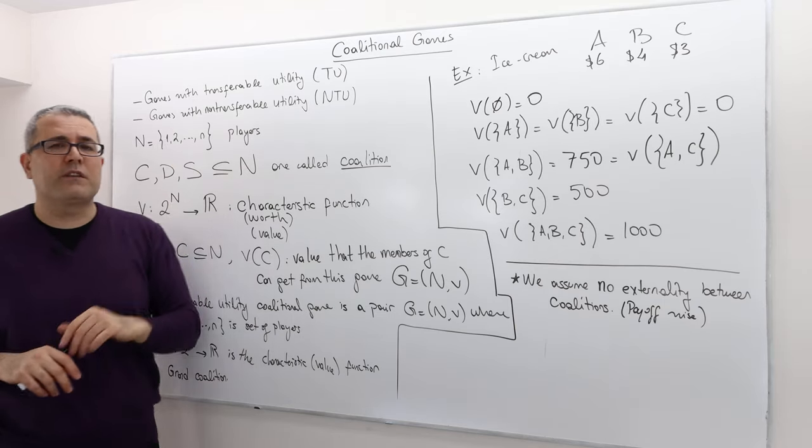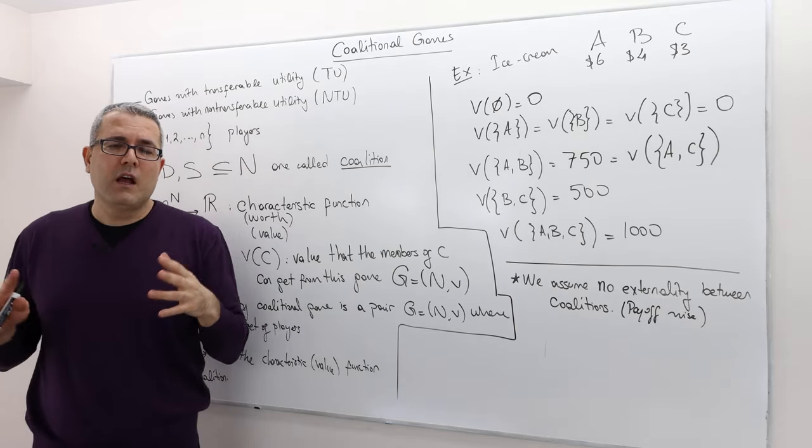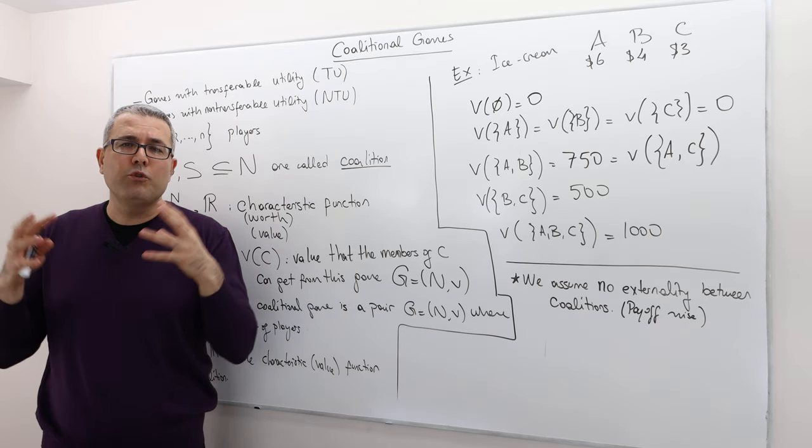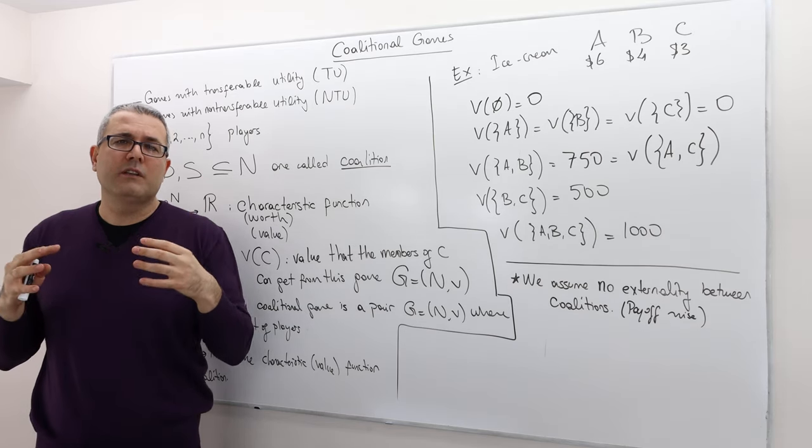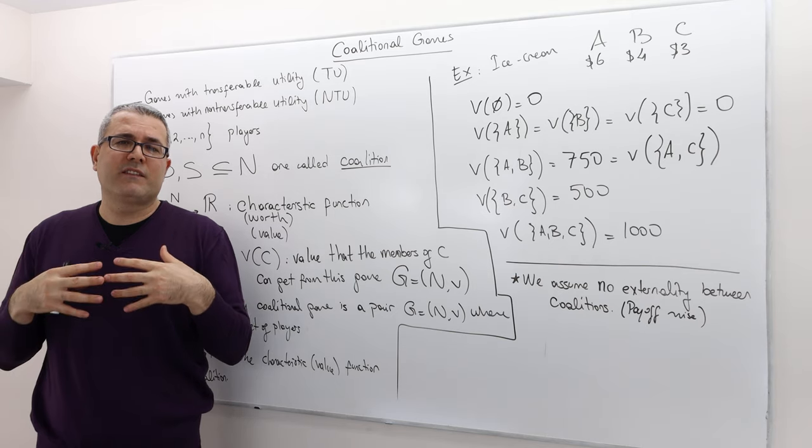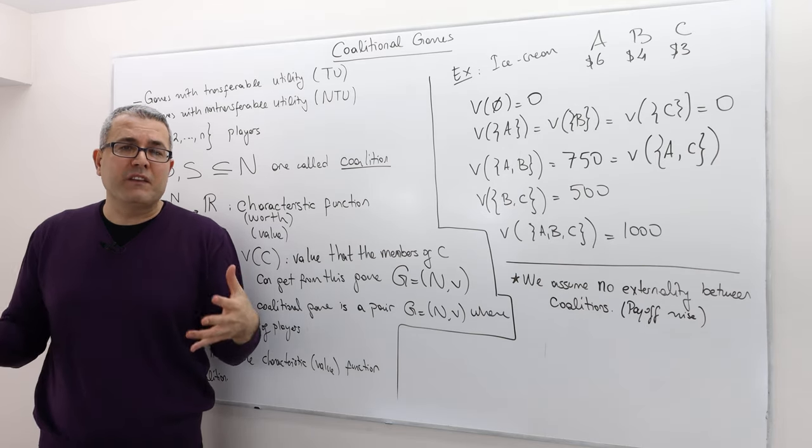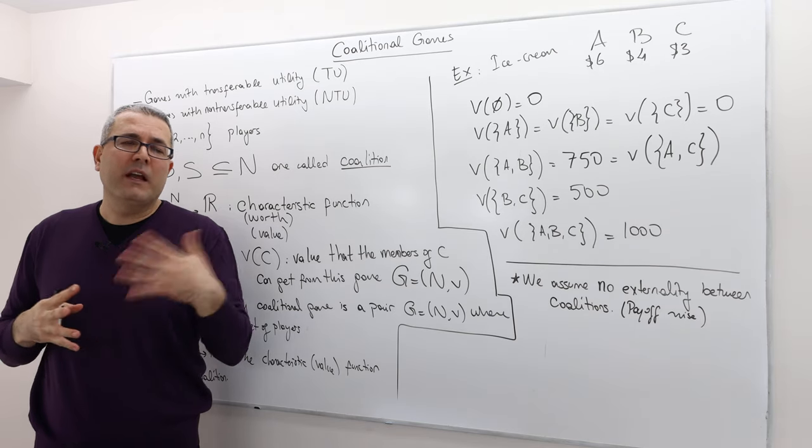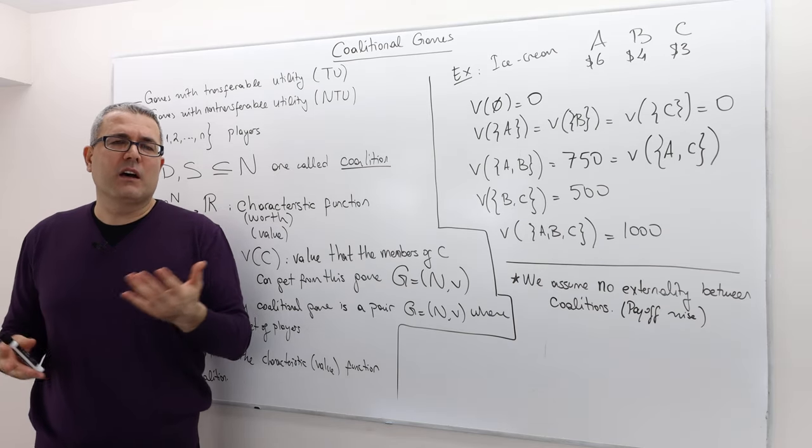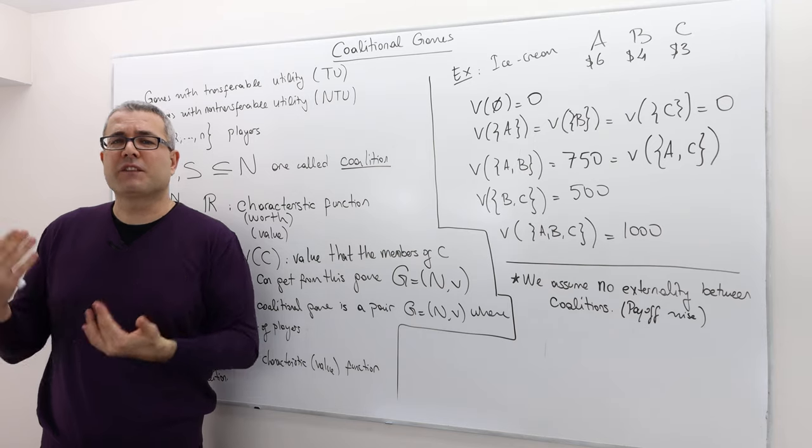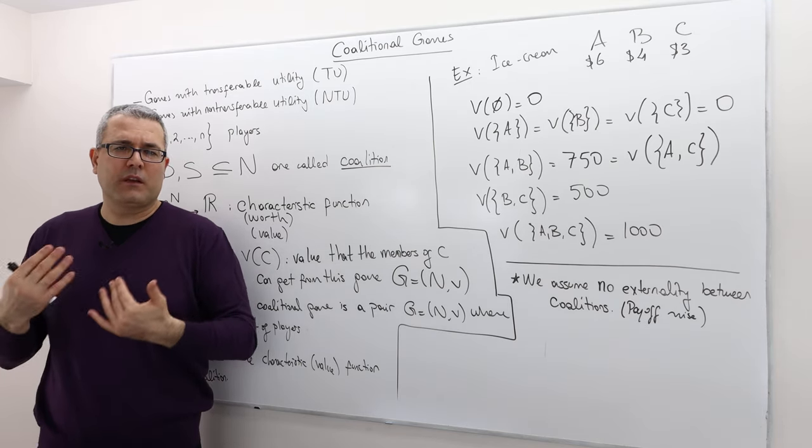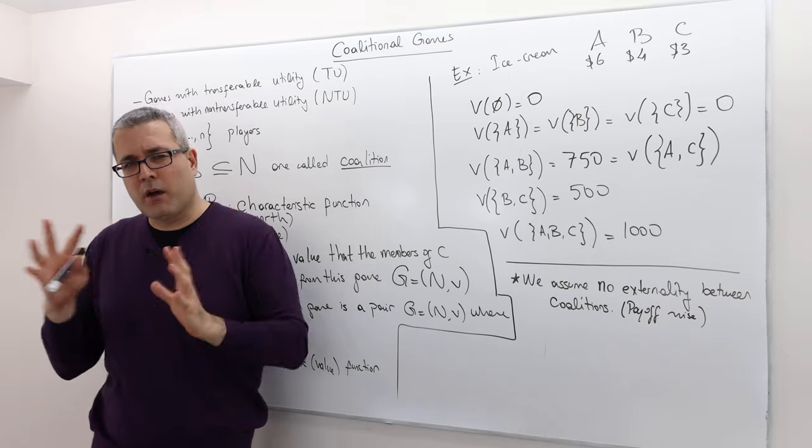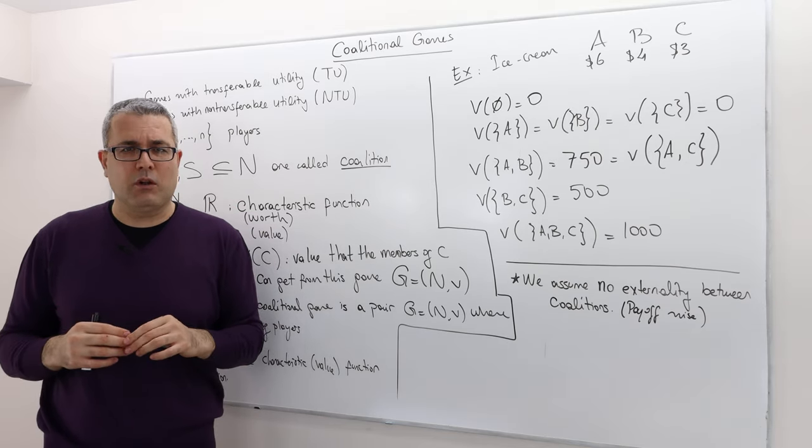In the non-transferable utility games however, probably the group or the coalition doesn't get a perfectly divisible good and money is not available, and so they cannot transfer utility among the members of the coalition.